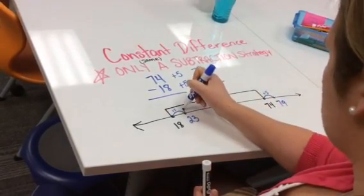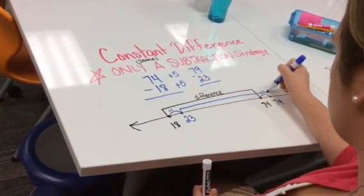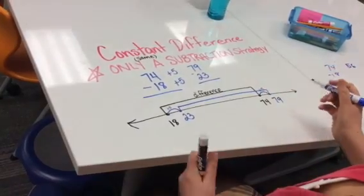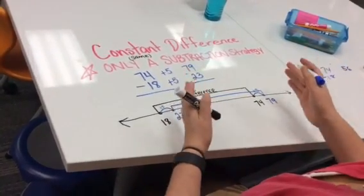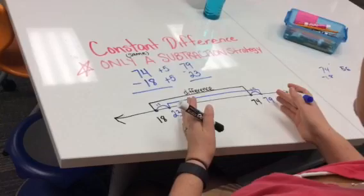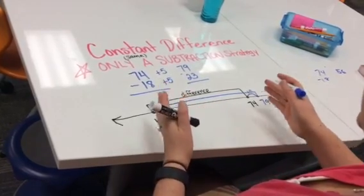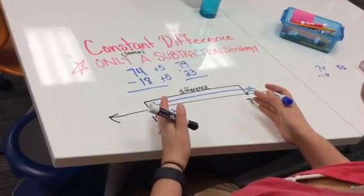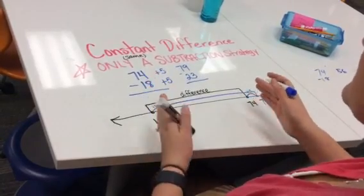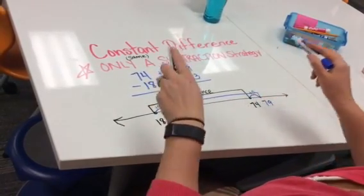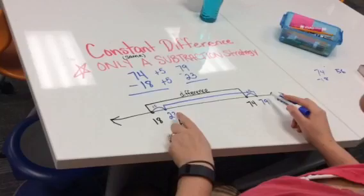I now can represent the difference with this blue line, and the difference between 23 and 79, and the difference between 18 and 74 is the same. It's almost like I took the black line and picked it up and moved it over 5 with both numbers.